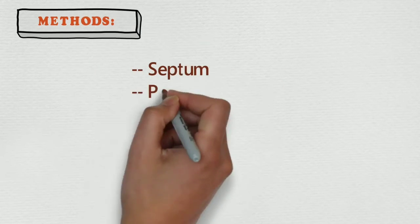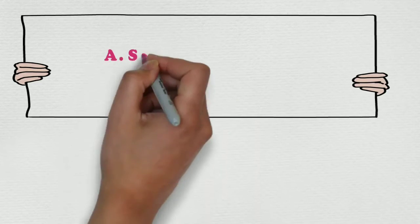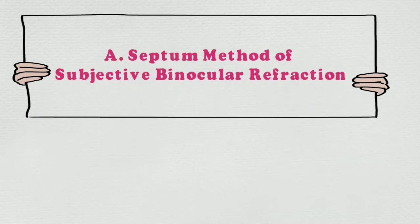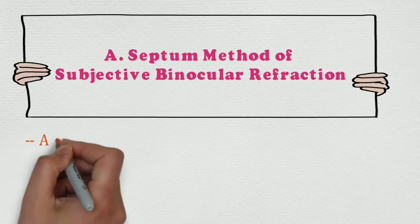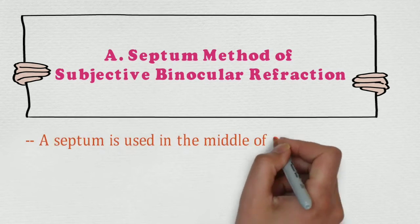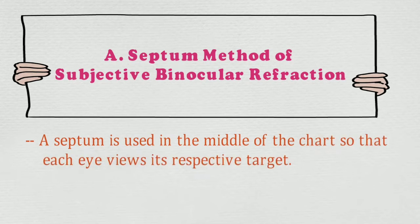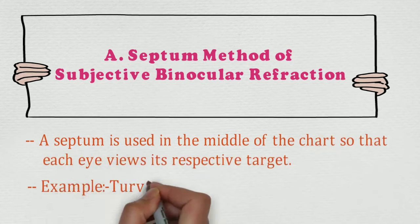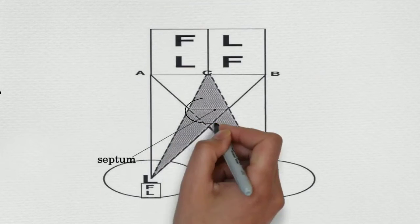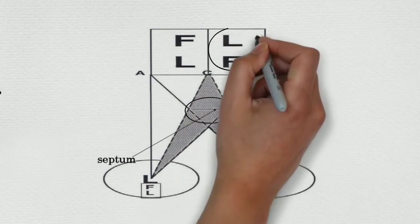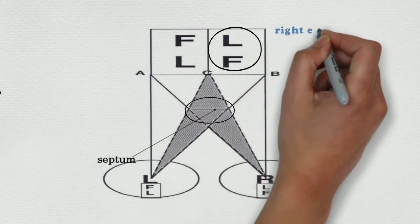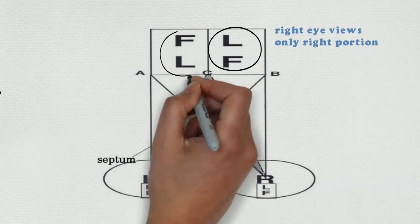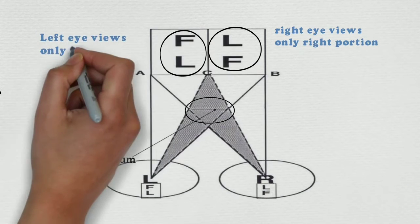Methods of binocular refraction: septum, polarization, and fogging. In the septum method of subjective binocular refraction, a septum is used in the middle of the chart so that each eye views its respective target. An example is the Turville Infinity Balance Test. In this figure, the septum causes the right eye to view only the right portion and the left eye to view only the left portion.